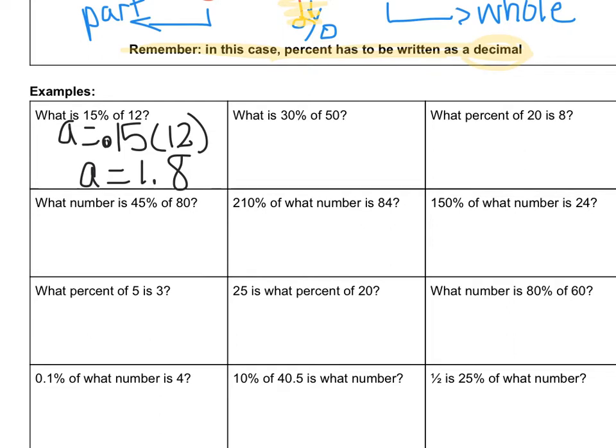Let's try the next one. So what is 30% of 50? The way we could look at it is we know of is our whole, so A equals 0.3, you can put the 0, and then times 50. So A equals 15.